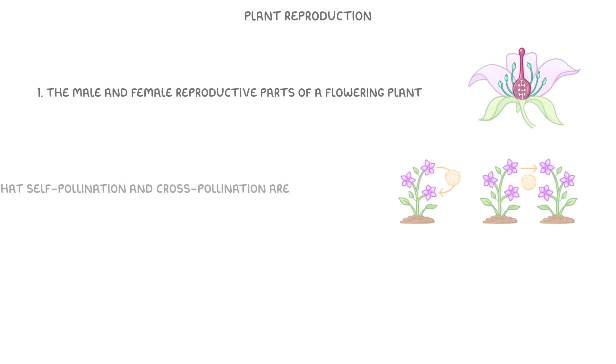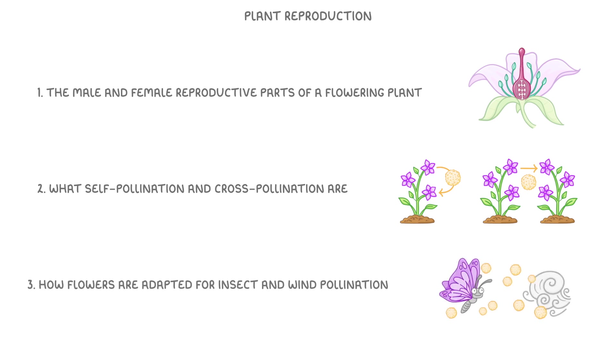In this video we're going to learn about plant reproduction. We'll cover the male and female reproductive parts of a flowering plant, what self-pollination and cross-pollination are, and also how flowers are adapted for insect and wind pollination.